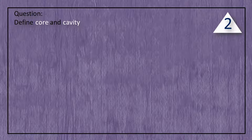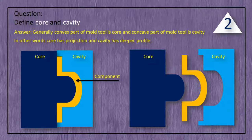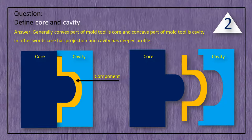Question: Define core and cavity. Answer: Generally, the convex part of the mold tool is the core and the concave part of the mold tool is the cavity. In other words, core has a projection and cavity has a deeper profile.